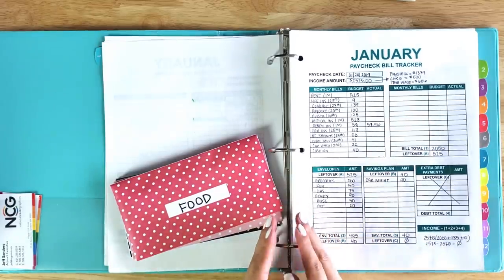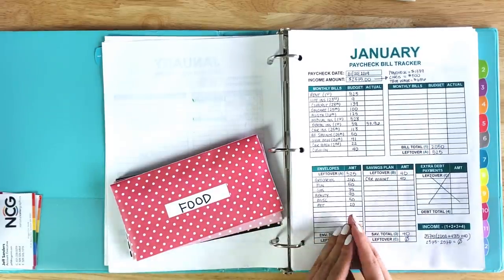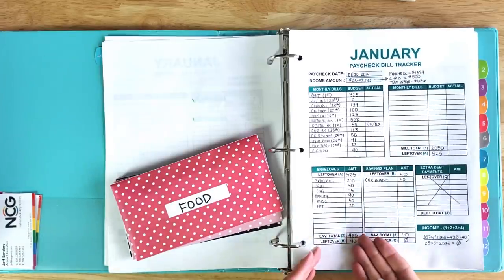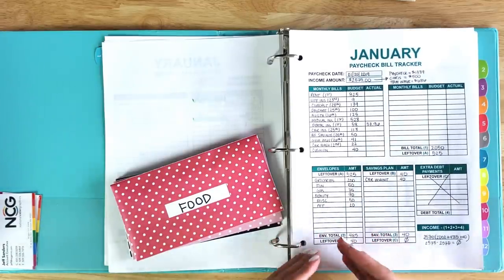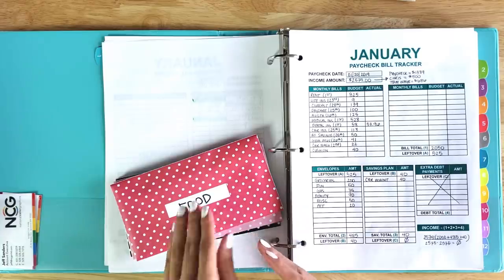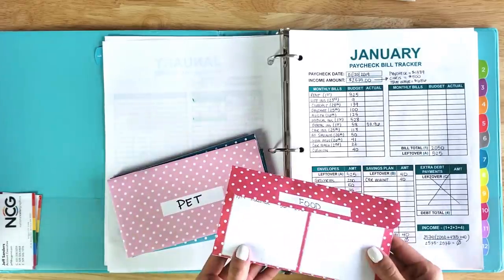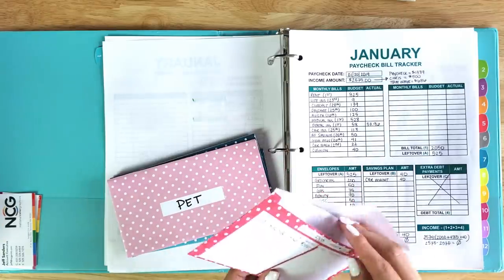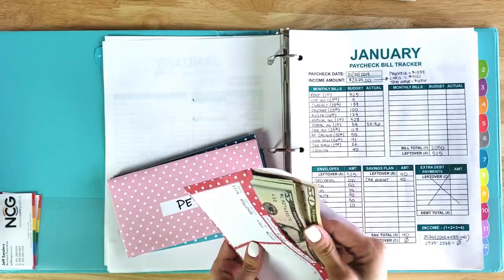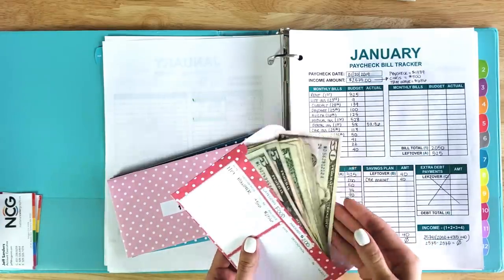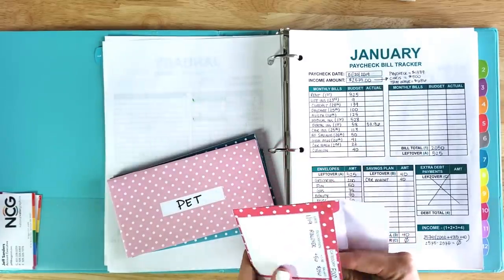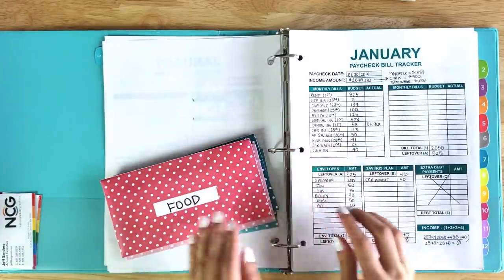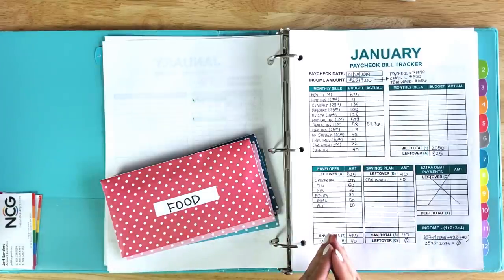For the cash envelope spending, it's always important to choose categories where you have a hard time overspending, where you have a hard time sticking to your budget, because the whole purpose of the cash envelope method is to deter you from overspending, because you can physically see how much you have to spend. Once it's gone, it's gone. Use categories that you have trouble with in your budget.